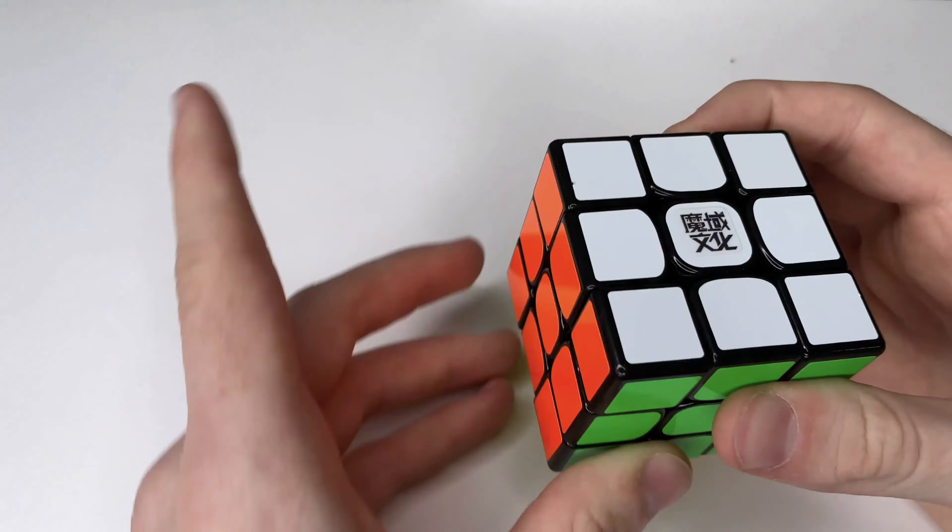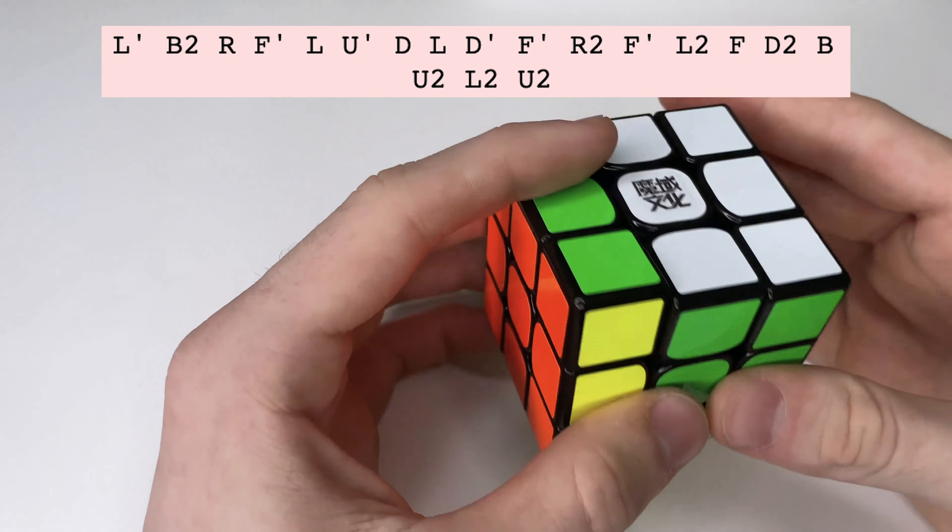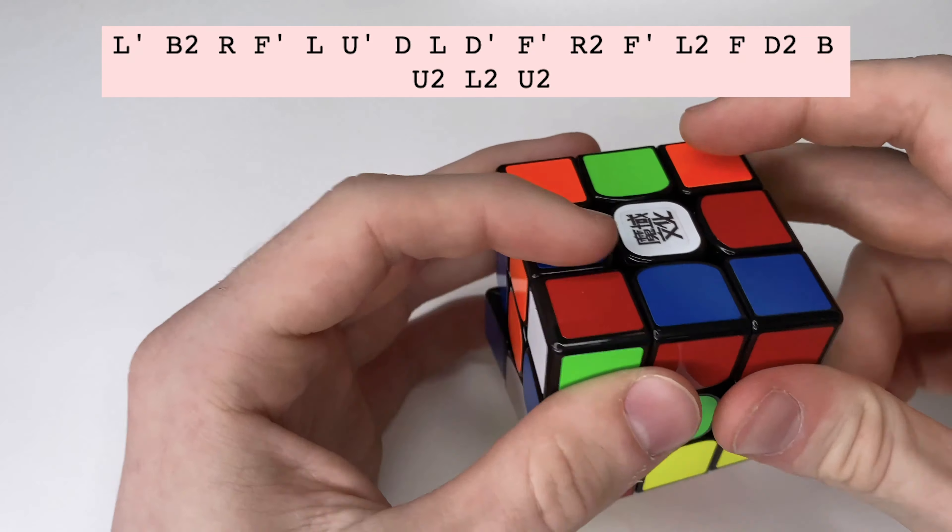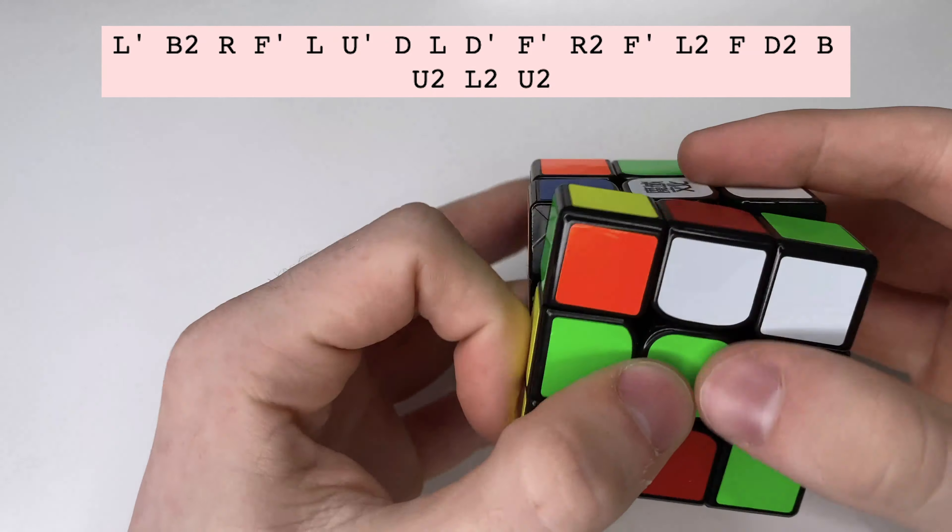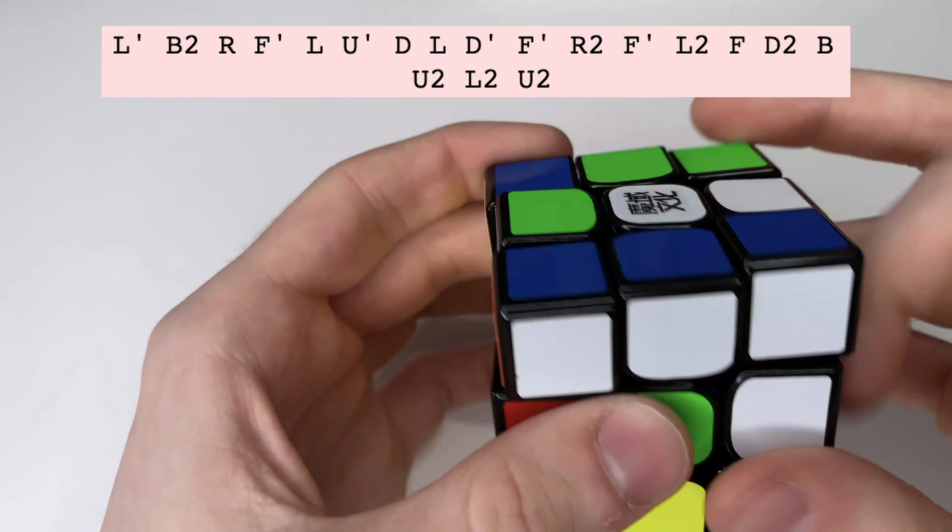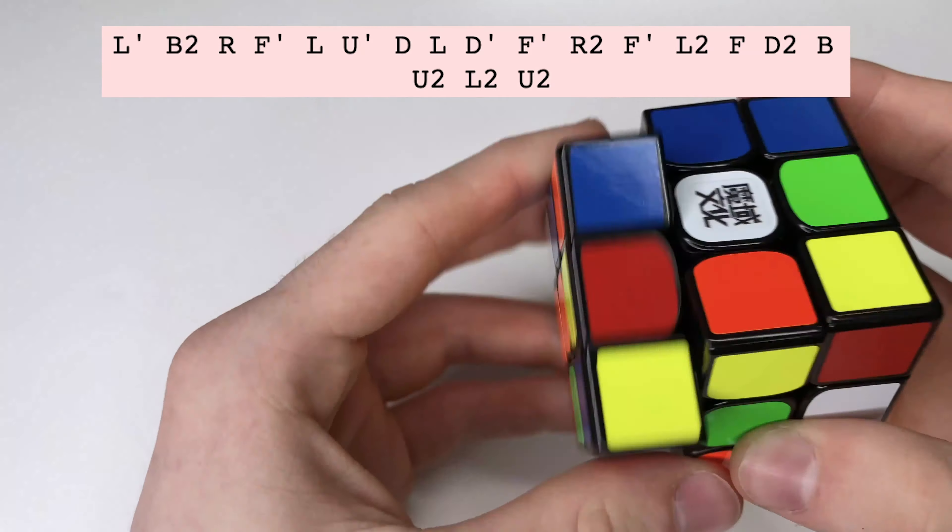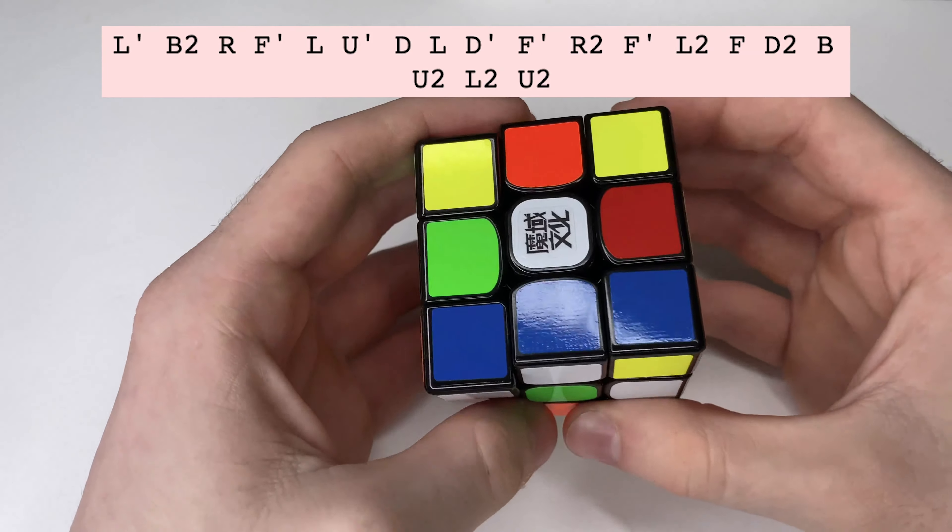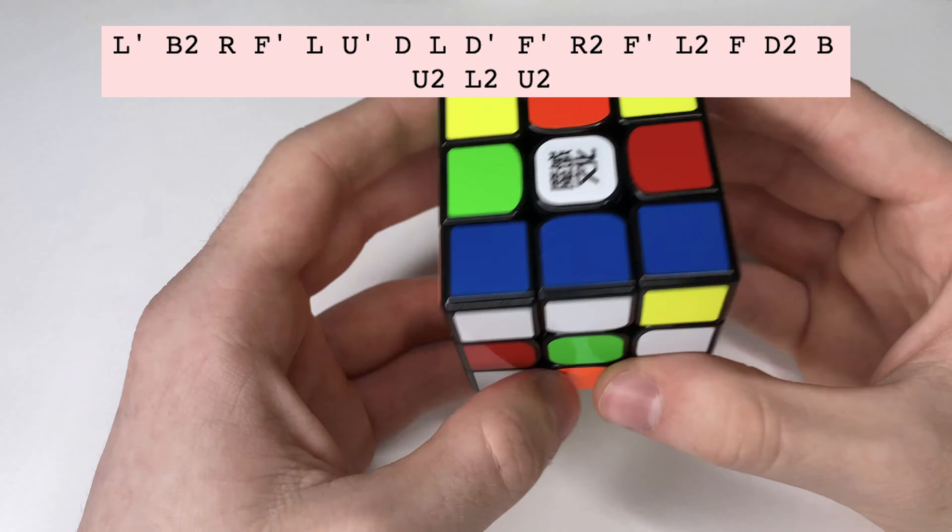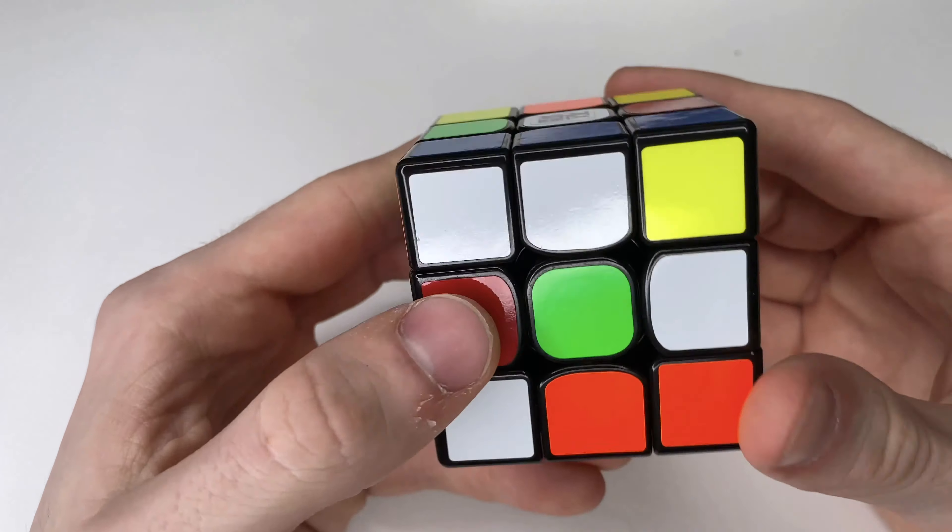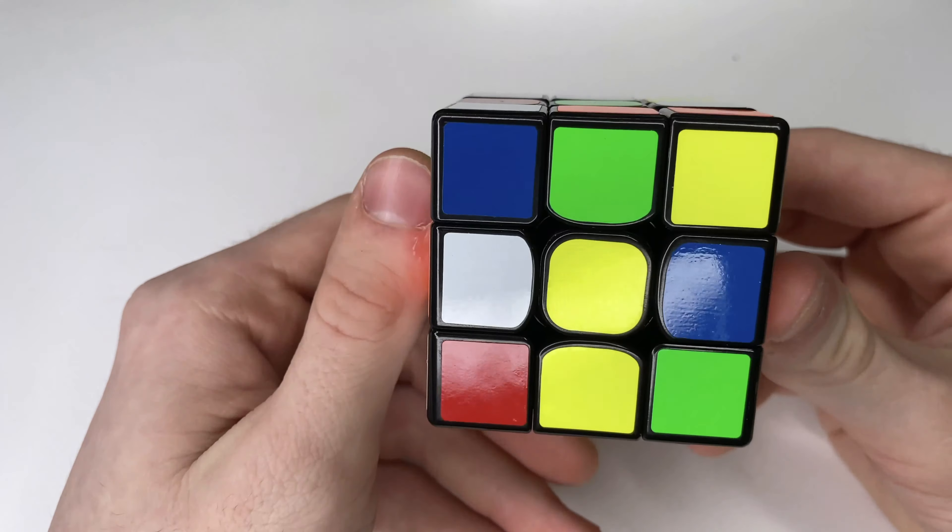All right, next scramble, putting up right here. I had like a stroke when I was reading that, sorry, it took me a second. All right, green in front, white on top, I've got this, to that, to that.